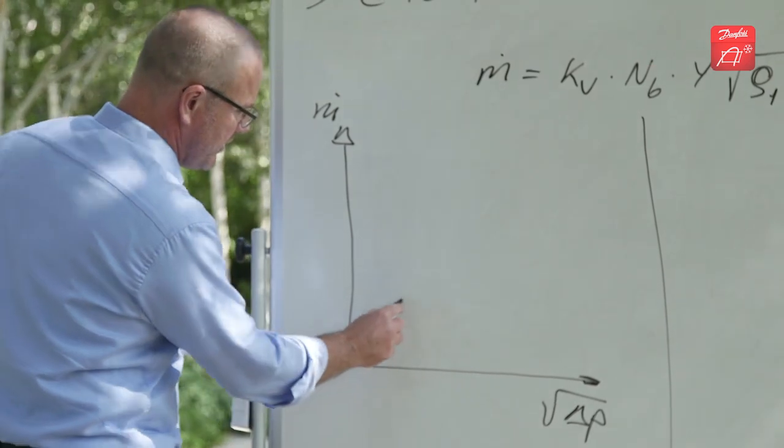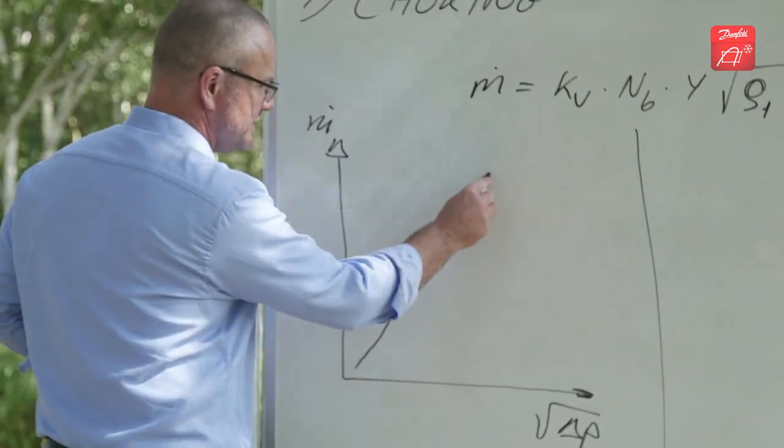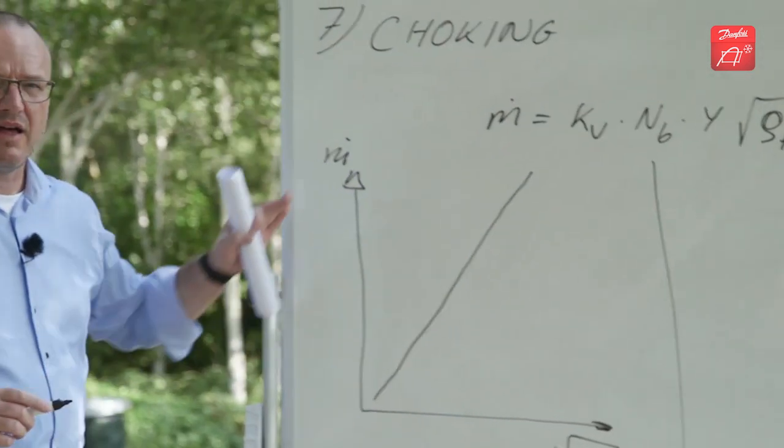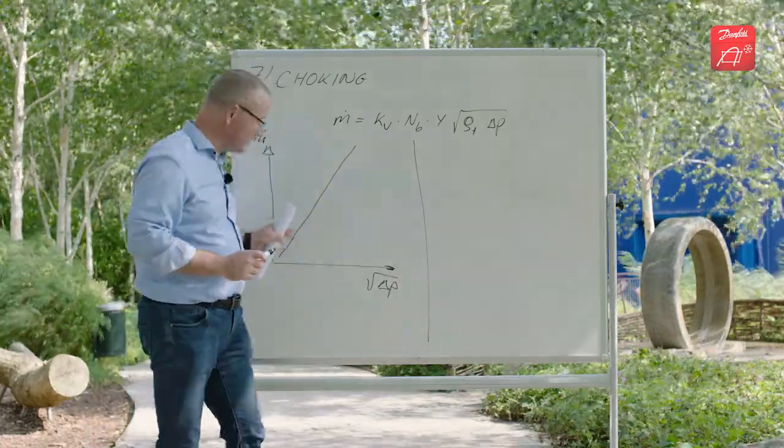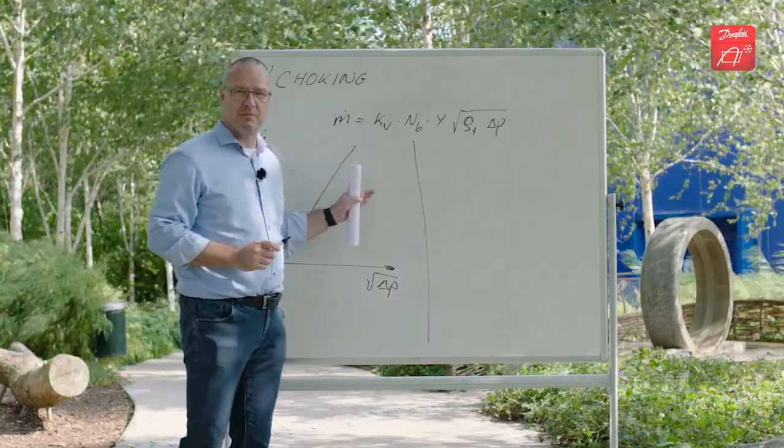So we would expect we get a curve that goes like this and just continues. When you do measurements on a real valve you actually get a curve like this, but only up to a certain point.